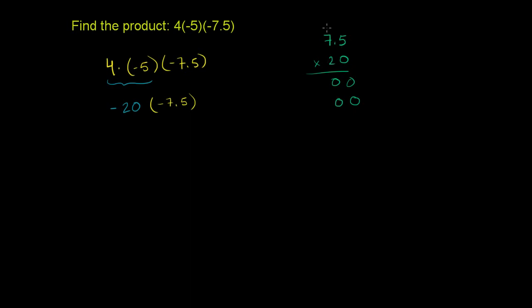So 2 times 5 is 10. 2 times 7 is 14. Plus 1 is 15. And we get a 0. We get a 0. We get a 5. I'm just adding here. You get a 1.